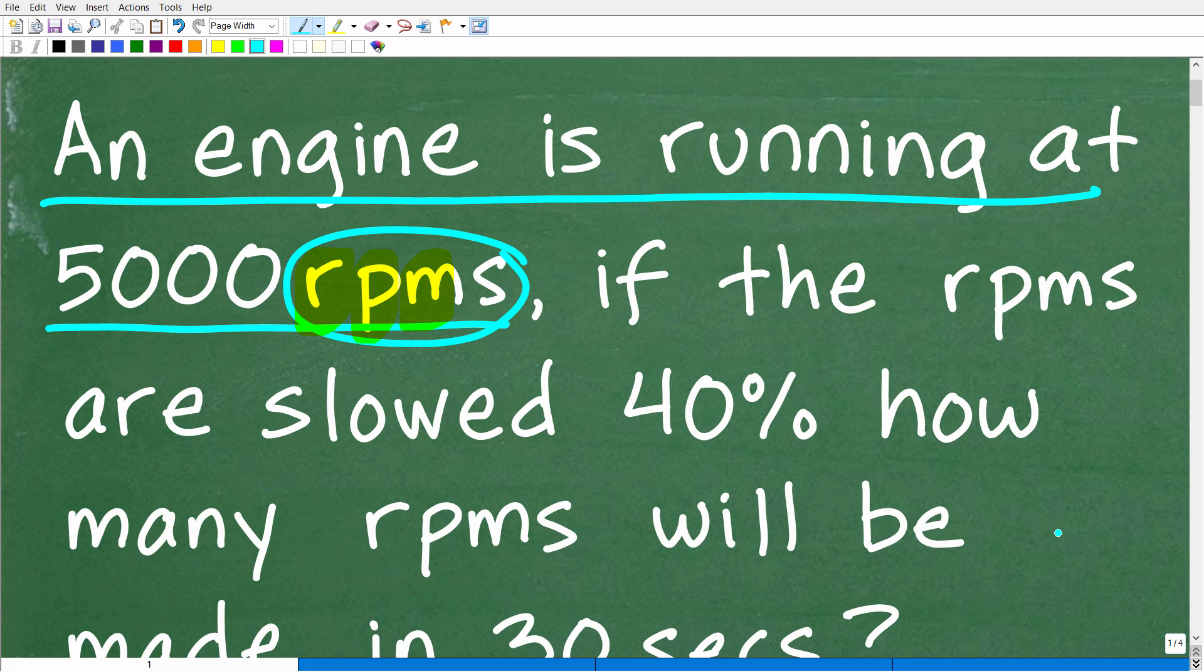Okay, so for example, if you have an engine, the engine is spinning. We're not going to get overly technical here, but the engine is spinning at a particular amount of revolutions per minute. So in this example, the engine is currently running at 5,000 revolutions per minute. That's what RPMs stand for.